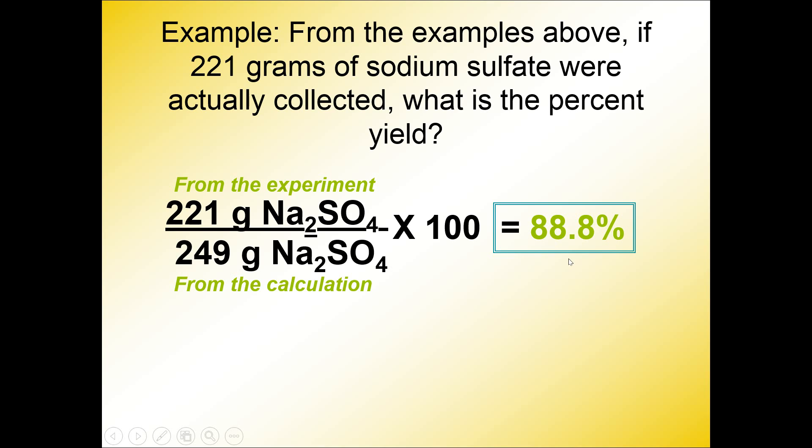And that's what would contribute to a lower percentage yield. Your goal is 100%, but in reality, we don't typically get 100%. Now, if you get over 100%, that means that you didn't quite do the experiment right in one way or another.